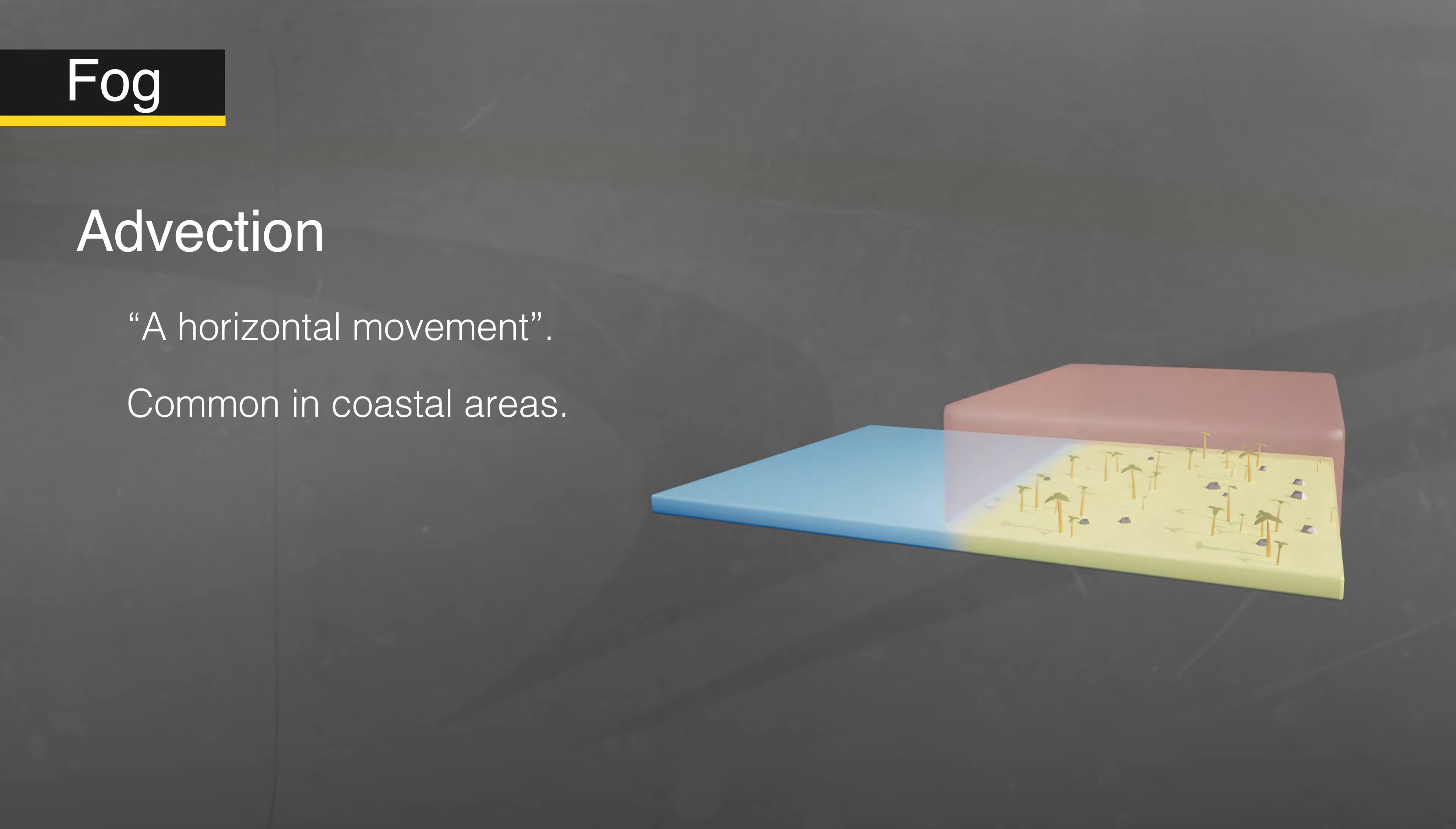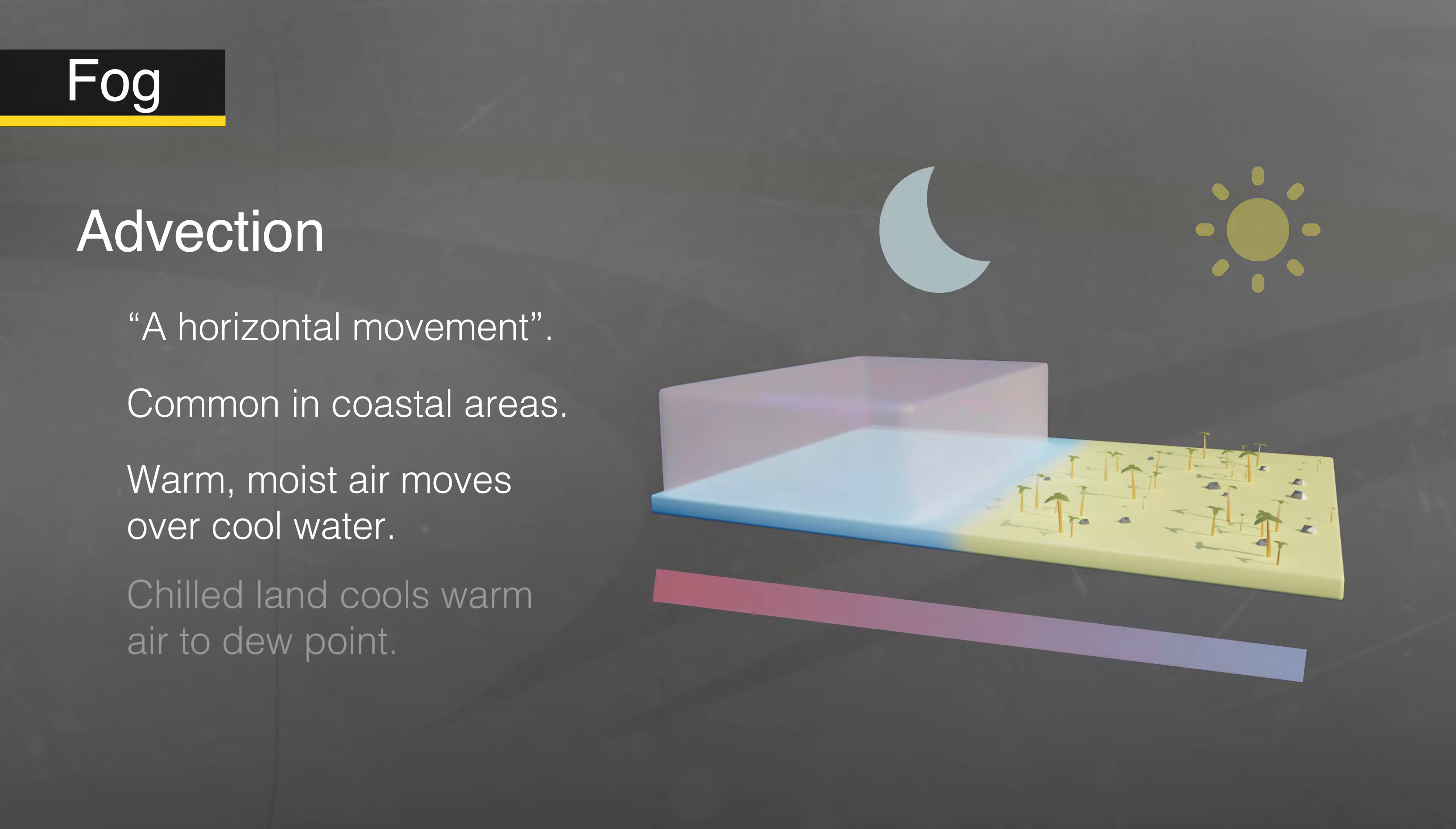Let's take advection fog for example. The word advection refers to a horizontal movement such as a wind blowing from west to east. This type of fog is common in coastal areas where warmer moist air blows over cool water near the coast or a chilly land mass that's cool enough to chill the air to the dew point.